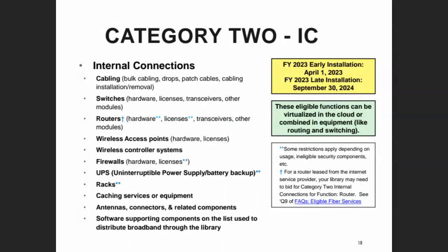I'm not an IT person — I am a humble librarian who helps you with this paperwork. Category 2 is split into three service types. The service type we mostly deal with is called internal connections — these are the pieces of networking equipment and cabling that you need to get your internet access to devices either on the library's network or accessing the Wi-Fi, including public access and staff computers and the many devices on your Wi-Fi every day.